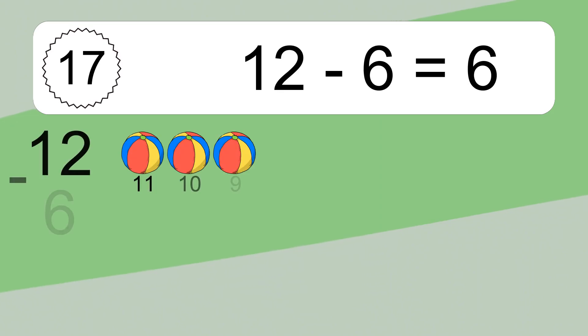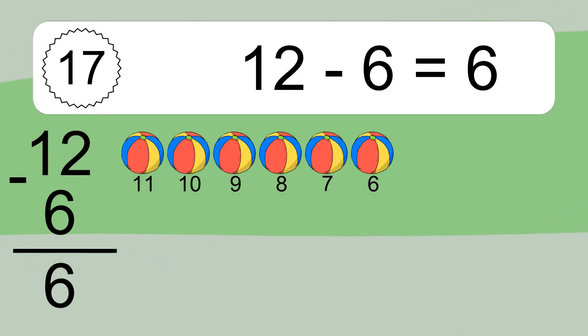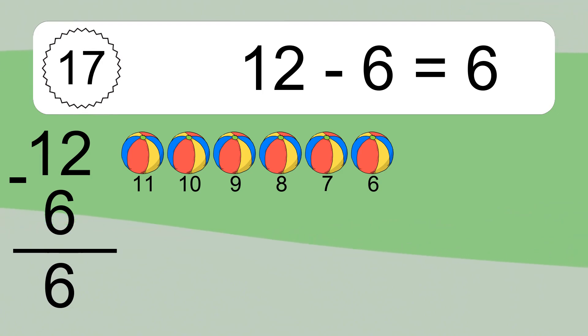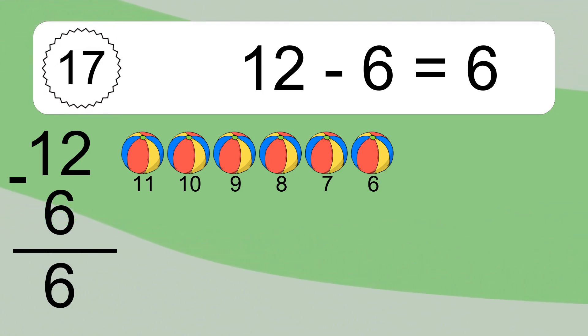12 minus 6 equals what? 12 minus 6 equals 6. Let's count it. 11, 10, 9, 8, 7, 6.